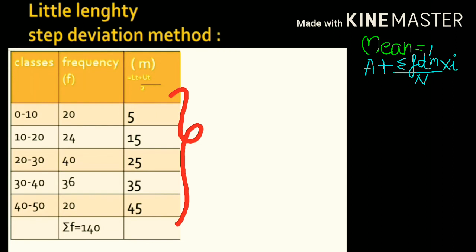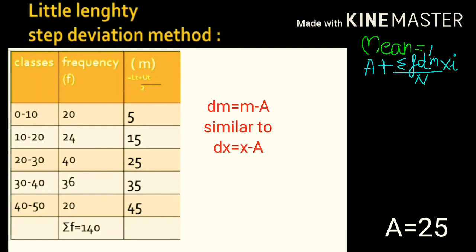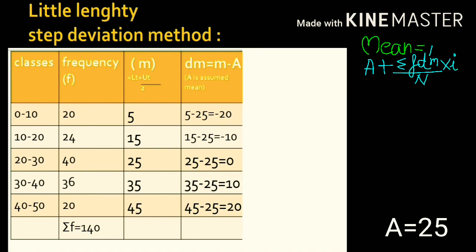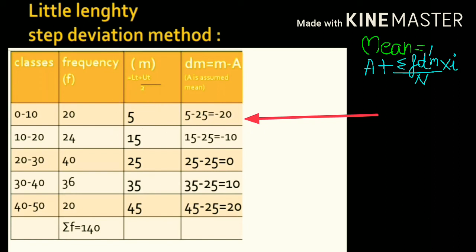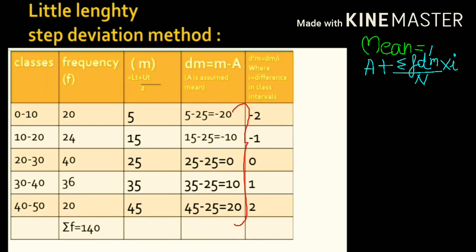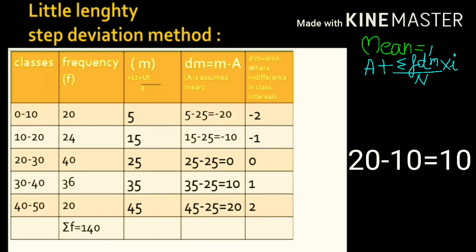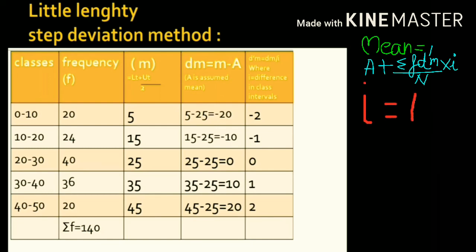The assumed mean will be taken from the m column — it can be 5, 15, or 25. In this question I have taken assumed mean as 25. dm is equal to m minus A, similar to how dx equals x minus A in the previous question. In the first row, m is 5 and A is 25, so 5 minus 25 is minus 20. We solve similarly for other rows. d'm equals dm upon i, where i is the class interval, calculated as the difference between upper and lower class limits. In the first row: 10 minus 0 equals 10; second row: 20 minus 10 is also 10. So the class interval is 10.